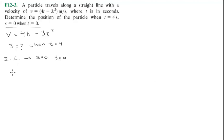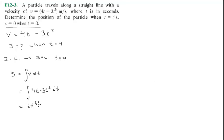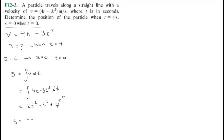We know that s is equal to the integral of velocity. So we integrate v, which is the integral of 4t minus 3t squared. That comes out to be 2t squared minus t cubed plus c. But we know that c is 0, because the initial conditions say that when t equals 0, s equals 0. So s comes out to be 2t squared minus t cubed.